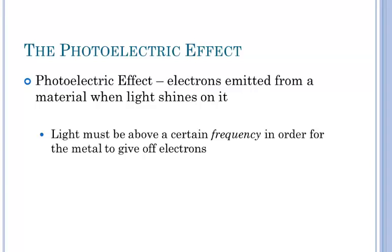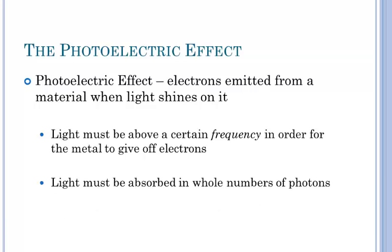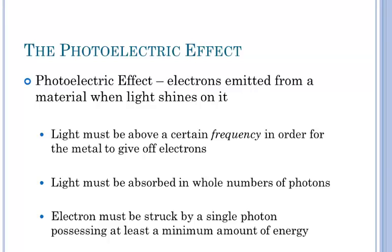Einstein said that light must have a certain frequency - it must have a certain energy in order to kick electrons off the metal surface. They must be absorbed in whole numbers of photons. It's a one photon versus one electron battle on the surface of these metals, with a minimum amount of energy to make it happen. If it doesn't have that energy, the electron doesn't get kicked off.